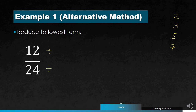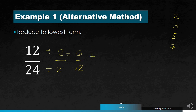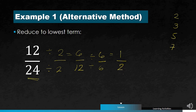Now with 6 over 12, you can see it still has a common factor. You can easily see that it's 6, so divide both by 6: you get 1 over 2 — since 12 divided by 6 is 2. Therefore, 12 over 24 is also equal to 1 half, which is its lowest terms.